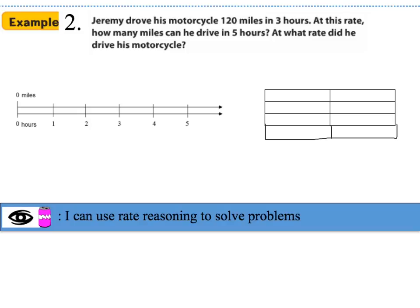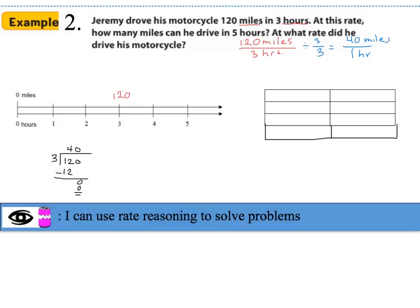Here's example two. It says Jeremy drove his motorcycle 120 miles in three hours. At this rate, how many miles can he drive in five hours? At what rate did he drive his motorcycle? We know this is a rate because we're comparing miles and hours. I'm going to write this as 120 miles per three hours. Using the double number line, I'll write 120 miles above the three-hour mark, then divide the top and bottom by three to find the unit rate: 40 miles per one hour.